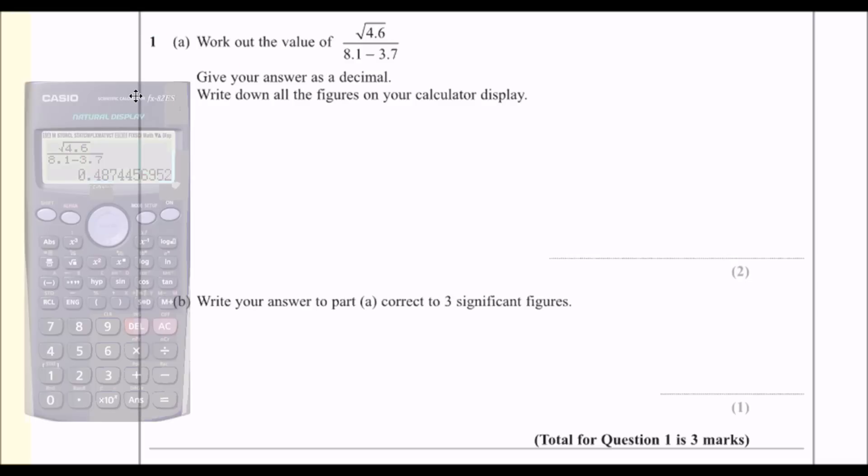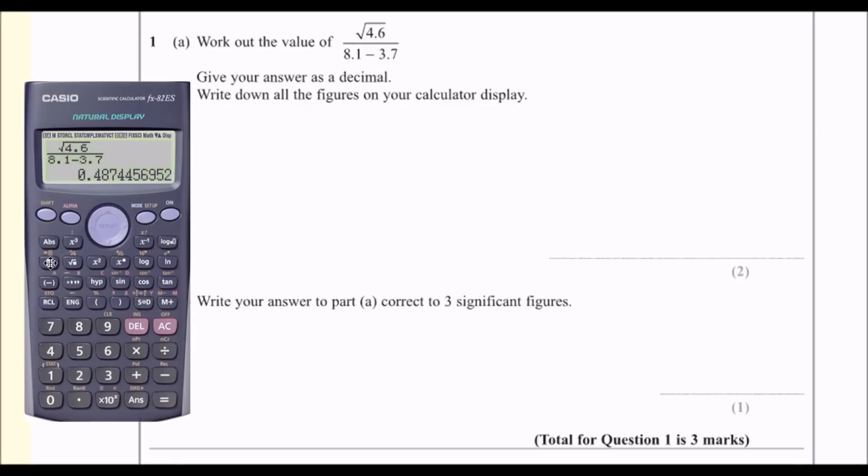Put the fraction button first, and then just type in exactly what you see. Now, it won't give you a decimal straightaway. You've got to press this SD button down here, and that'll switch the fraction answer to a decimal.